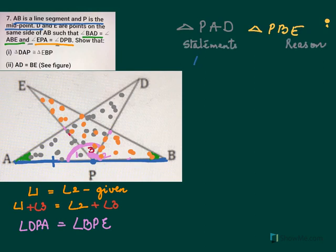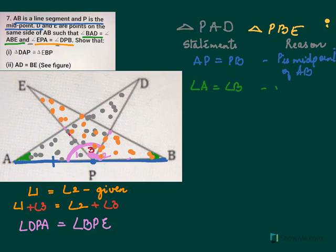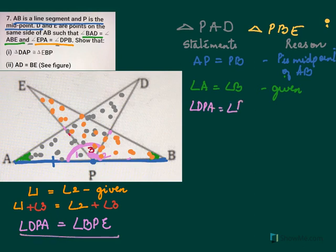First, AP equals PB because P is the midpoint. Second, angle A equals angle B, which is given. Third, angle DPA equals angle BPE, which we have already proved.